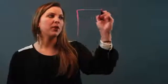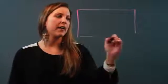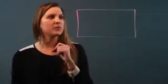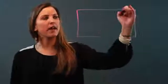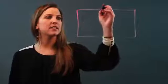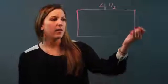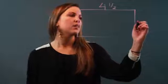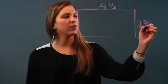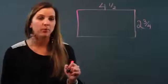First of all, we need to know that perimeter means to add up all the sides, right? So if I have this rectangle here and let's say I know that my length is 4 1/2 and I know that my width is 2 3/4 and I want to find the perimeter.